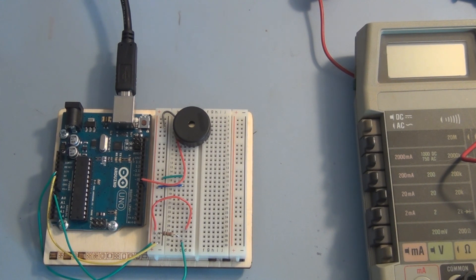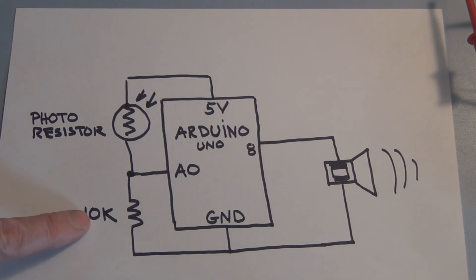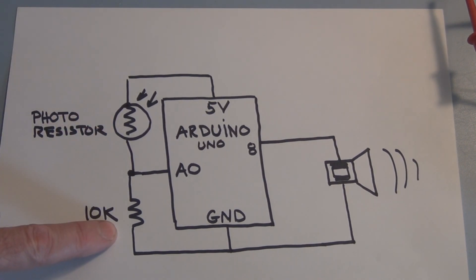So let's take a look at the circuit first. So here's the circuit. We have the Arduino and then we have a photoresistor and a 10k resistor which forms a voltage divider.